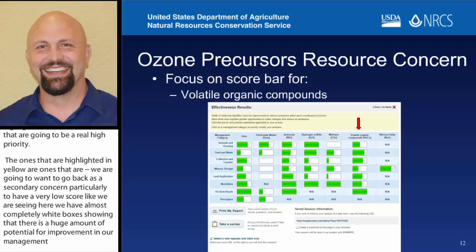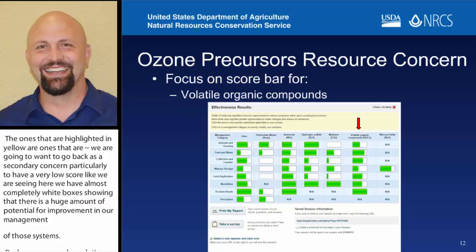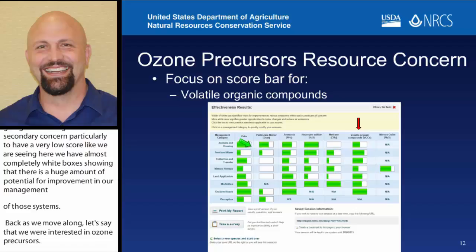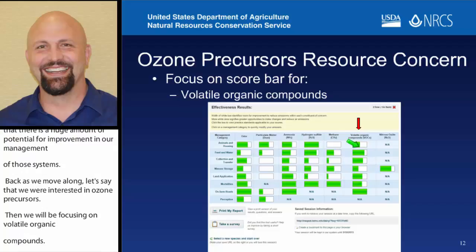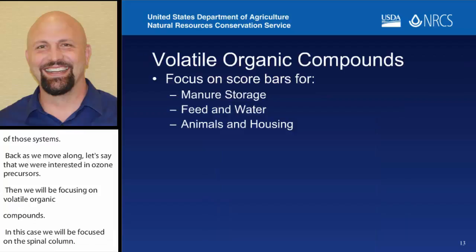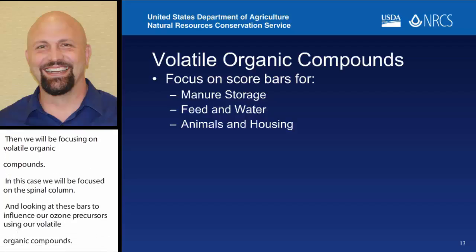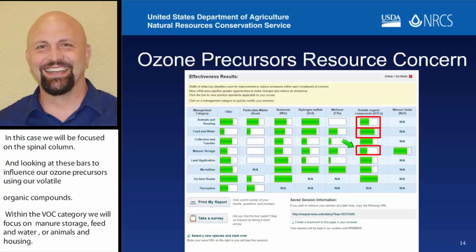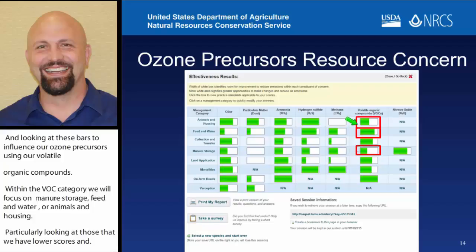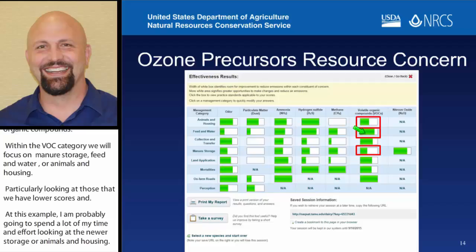If we were interested in ozone precursors, we're going to be focusing on volatile organic compounds. In that case, we're going to be focused on this final column, looking at these bars to influence our ozone precursors using our volatile organic compounds. Within the VOC category, our big focus areas — where we're going to have a large bang for our buck — is going to be manure storage, feed and water, or animals and housing, particularly looking at which ones may have lower scores. In this example, I'm probably going to spend most of my time looking at manure storage or animals and housing, since feed and water shows the producer is making some really good decisions with not a lot of room for improvement.